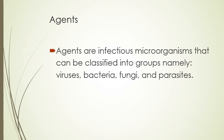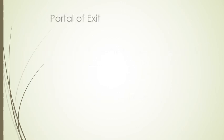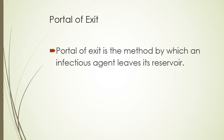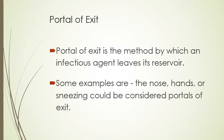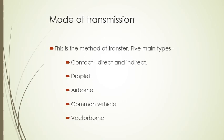Infectious agents are microorganisms classified into groups such as viruses, bacteria, fungi, and parasites — it is these agents that cause disease. The portal of exit is the method by which an infectious agent leaves its reservoir; examples include the nose, hands, and sneezing. The mode of transmission is the method of transfer, and there are five main types: contact (direct or indirect), droplet, airborne, common vehicle, and vector-borne.